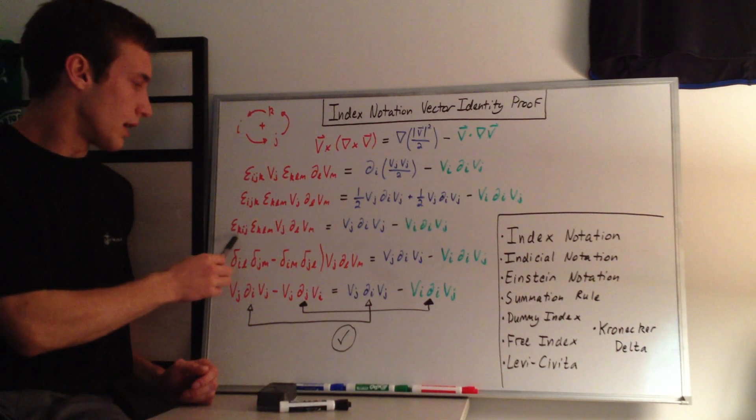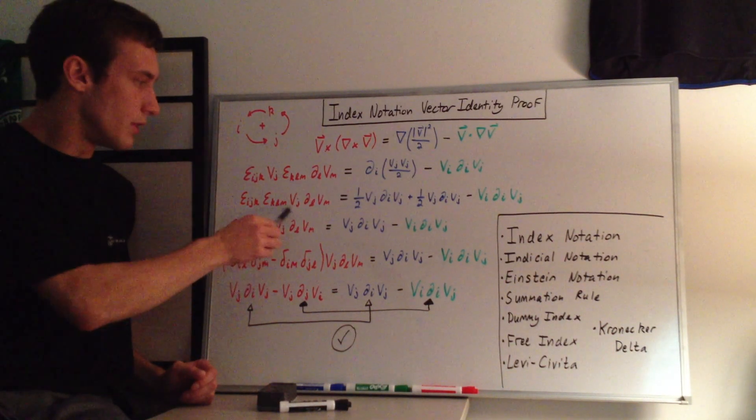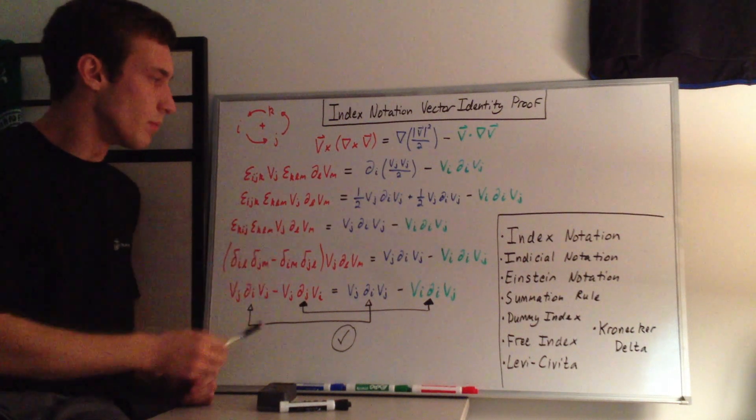So we have epsilon_kij, epsilon_klm. And then these stay the same, v_j, d_l, v_m.